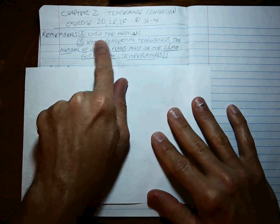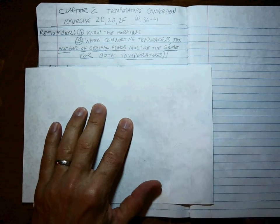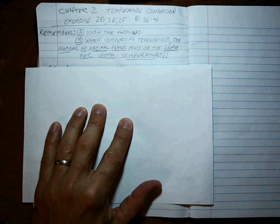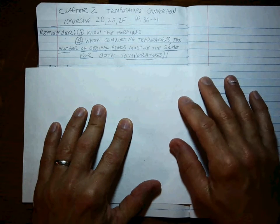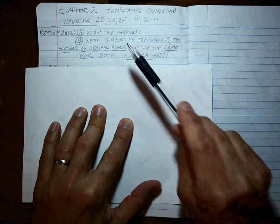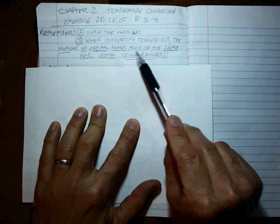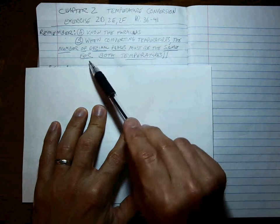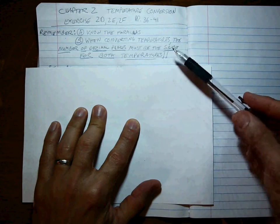Remember that you have to know the formulas for converting Celsius to Fahrenheit, Fahrenheit to Celsius, or Celsius to Kelvin, or Kelvin to Celsius. You really only need to know two different formulas. Most importantly, when converting temperatures from different scales, the number of decimal places must be the same for both your original temperature and the temperature that you convert to.